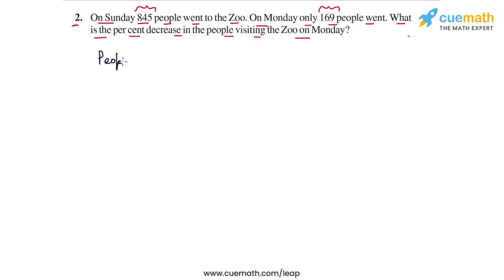So let's write the information given. People on Sunday, this number was 845. And people on Monday, this number was 169.